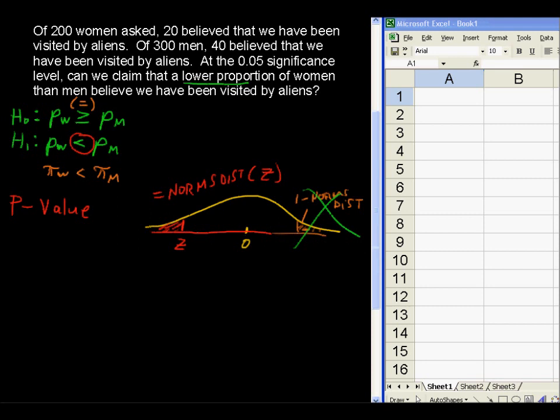Now, the z. It's a little bit involved actually. It's not difficult, it's just tedious. So the z that we're looking for equals p-hat₁ minus p-hat₂. And let's keep these in the same order. So the w is the 1, the women is the p-hat₁, and the men's proportion is p-hat₂. That's our sample proportion, minus our hypothesized difference, p₁ minus p₂.